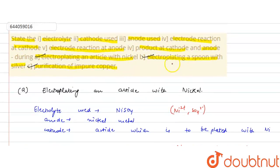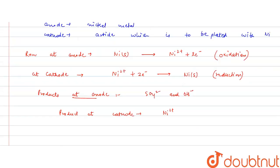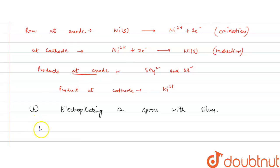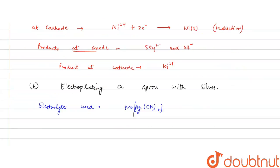For process B — electroplating a spoon with silver — the electrolyte used is Na₂[Ag(CN)₂], sodium argentocyanide. The anode is made up of silver metal, and the cathode is the spoon which is to be plated with silver.